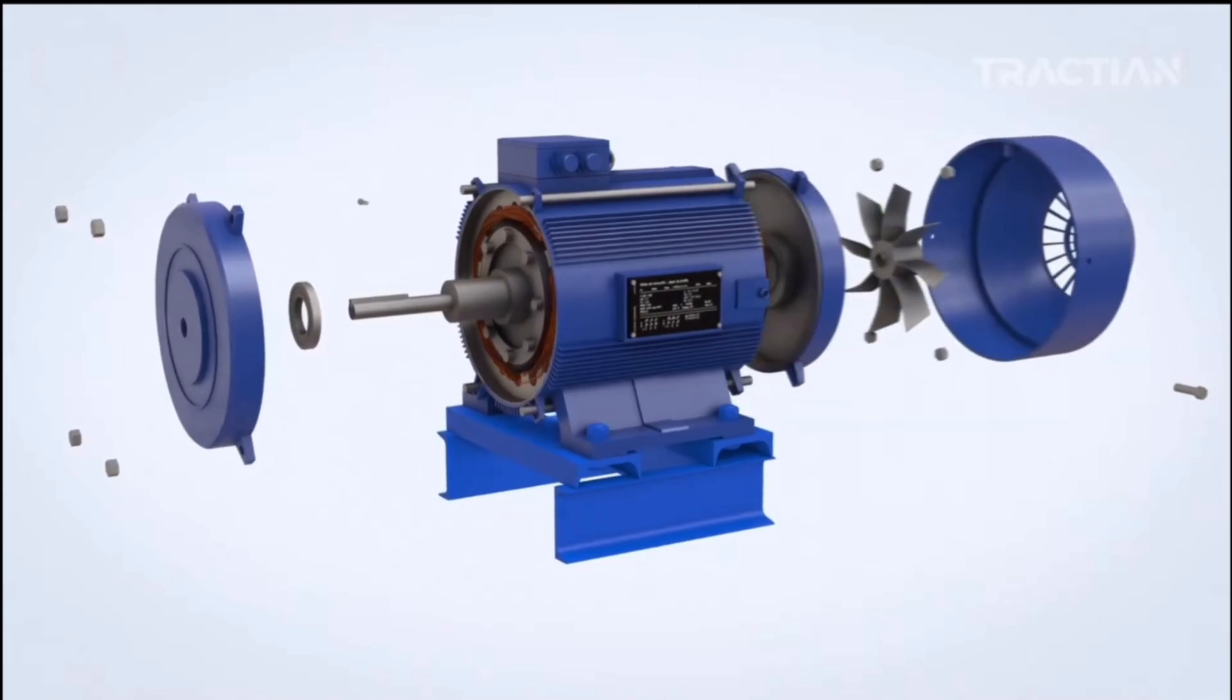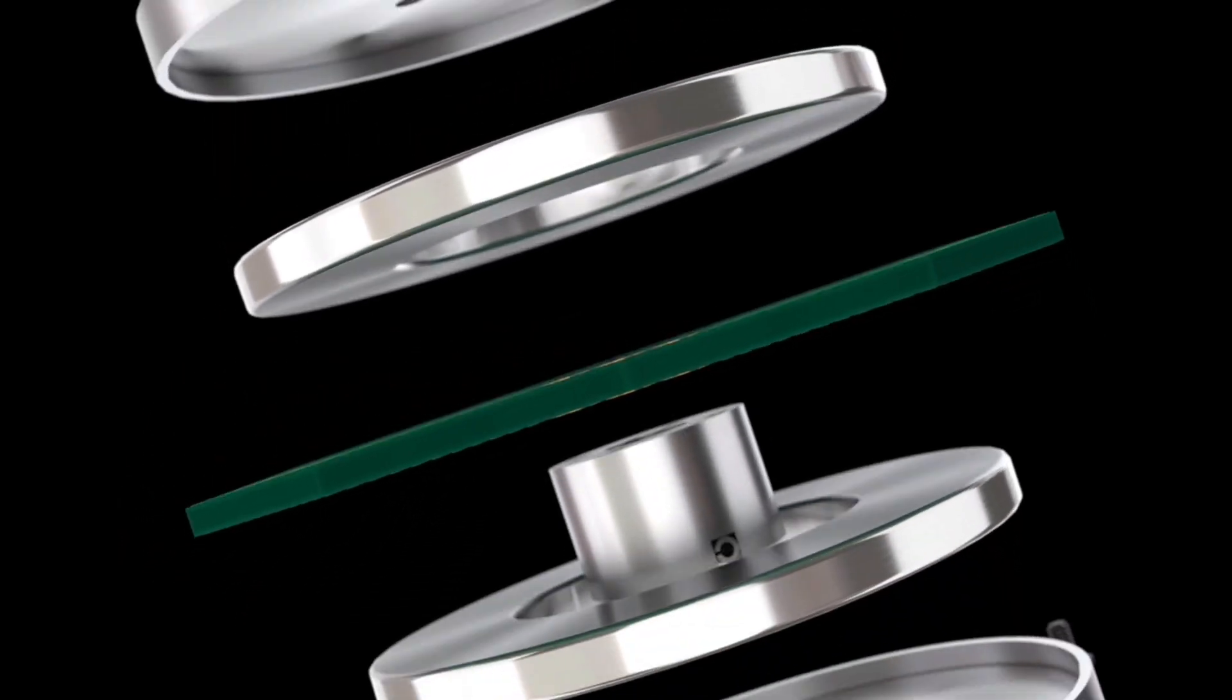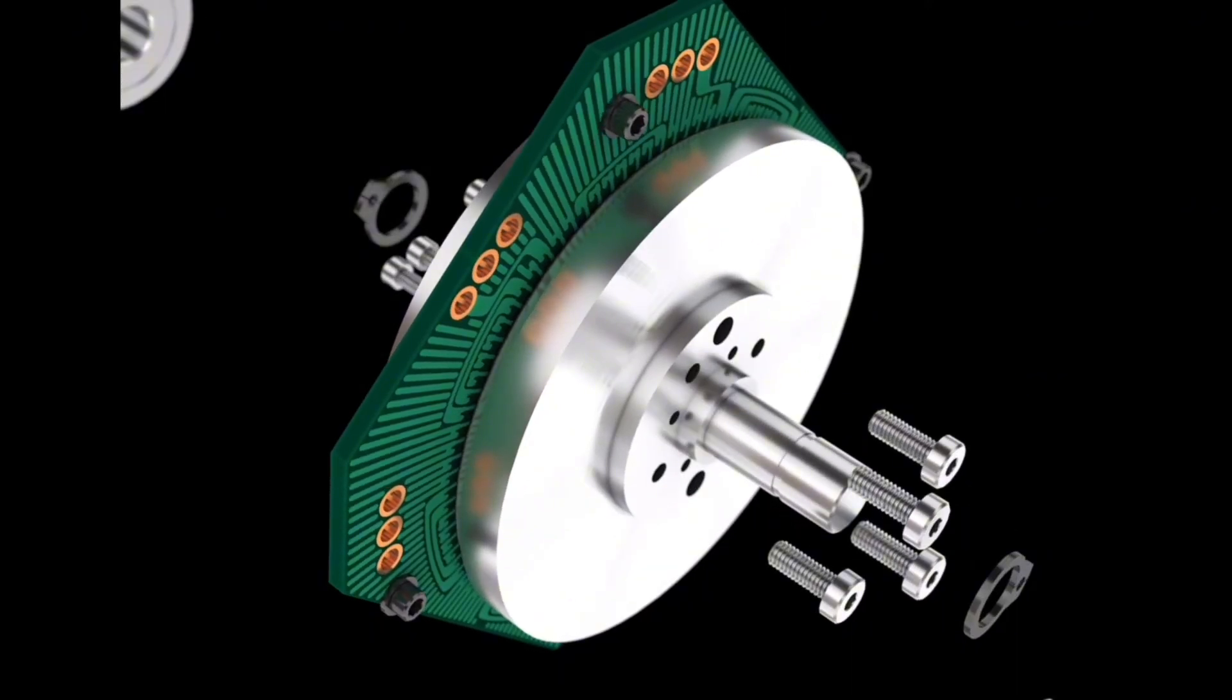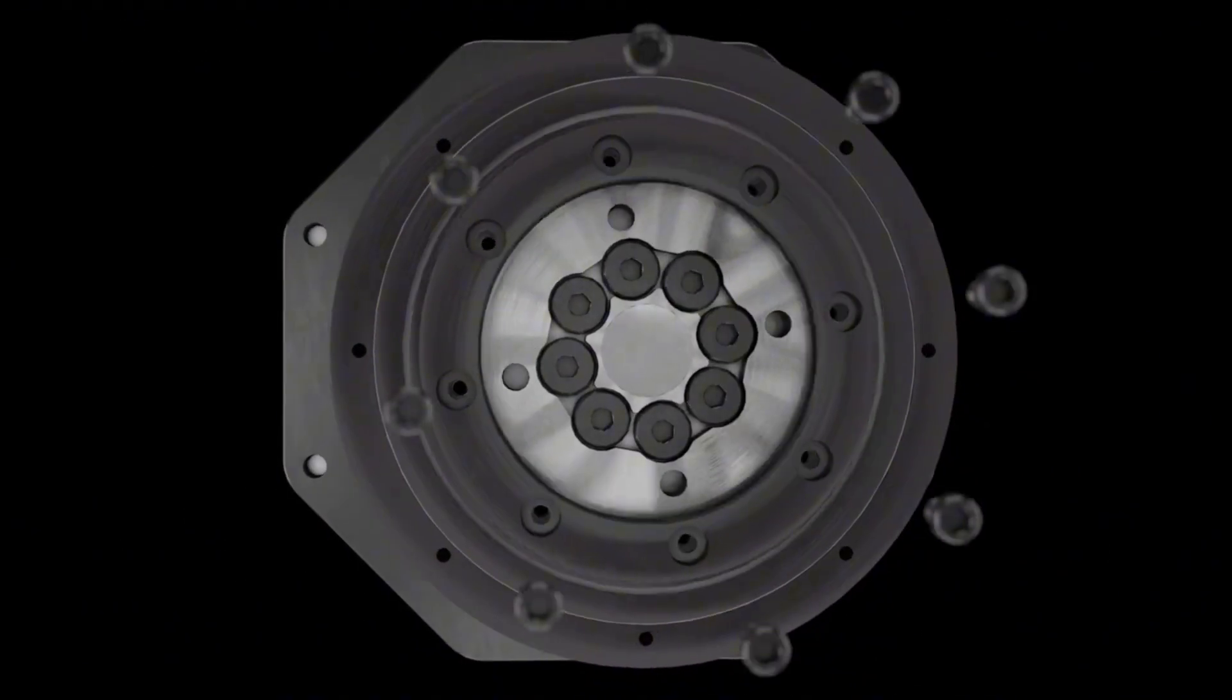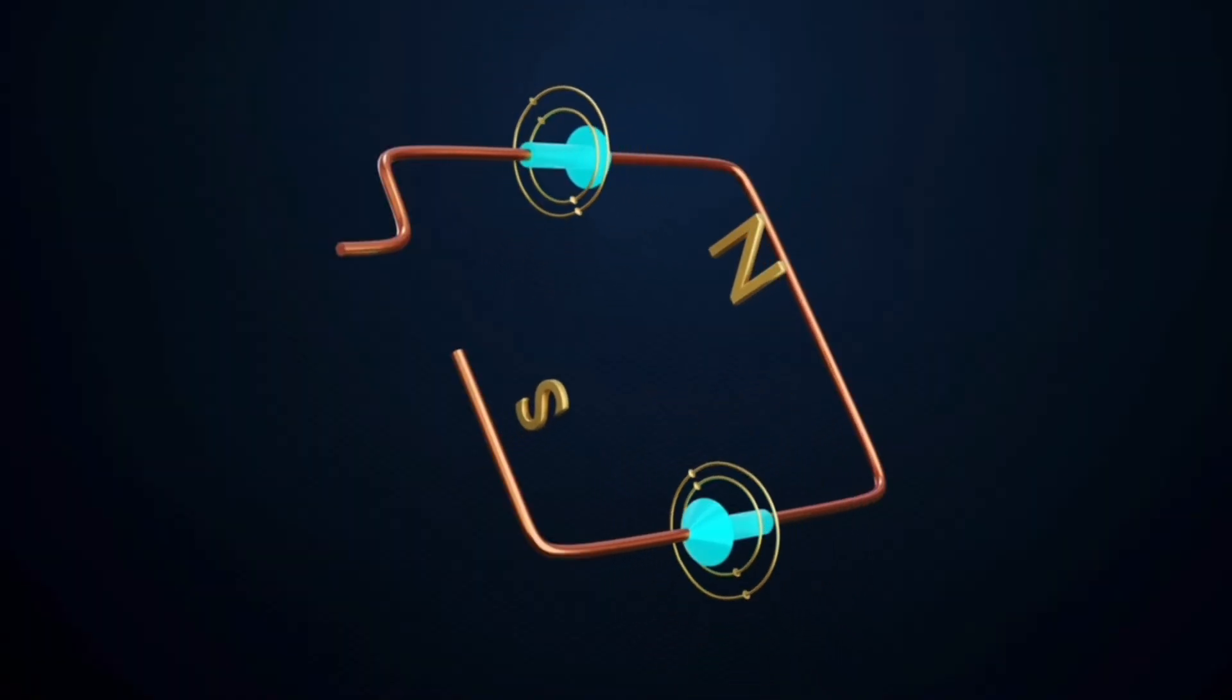One significant challenge in electric motors is energy loss, including phenomena like magnetic flux leakage. This occurs when part of the magnetic field escapes the main magnetic circuit due to irregularities in the winding distribution or design.